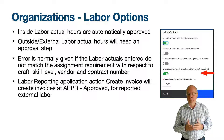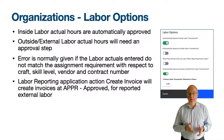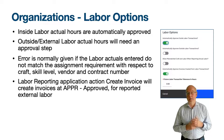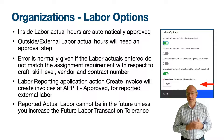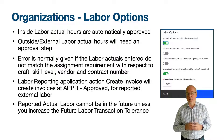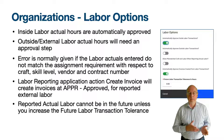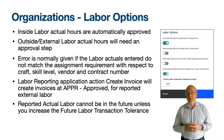The 'allow mismatch craft and labour when reporting actual labour' option is normally unchecked. You would receive a validation error if the labour entered on an actual record does not match the craft, skill level, vendor and contract already on the actual labour transaction. 'Automatically approve invoices created from labour transactions' has effect only from the labour reporting application on external labour when the create invoice action is used — the created invoices would already be at an APPR approved state. Future labour transaction tolerance in hours defaults to zero, meaning you cannot enter an actual labour transaction which is in the future.